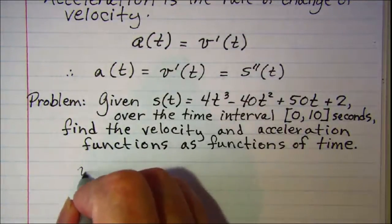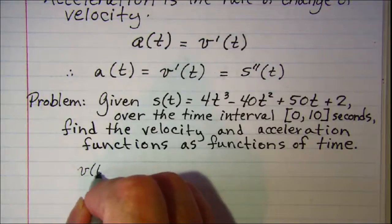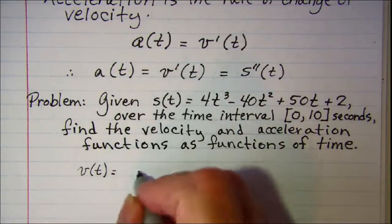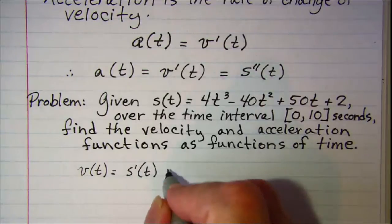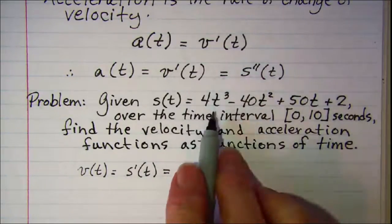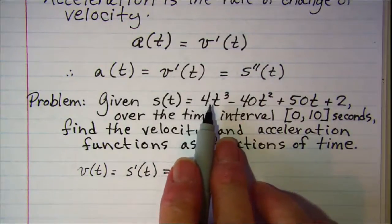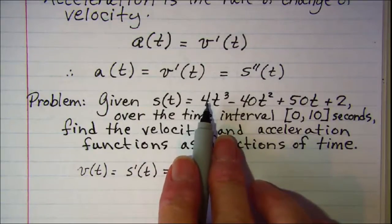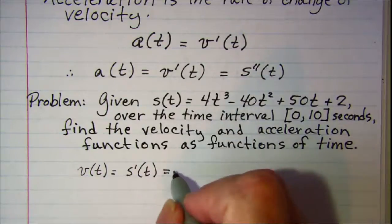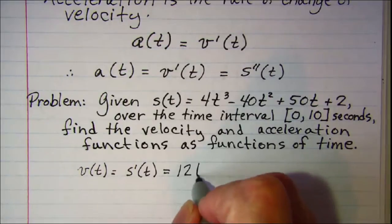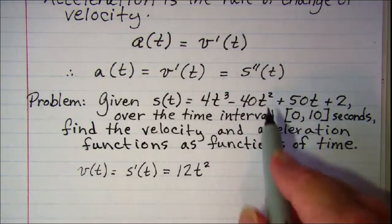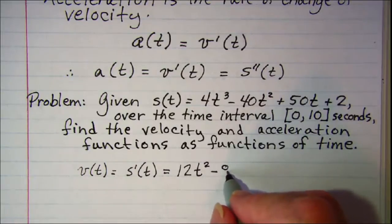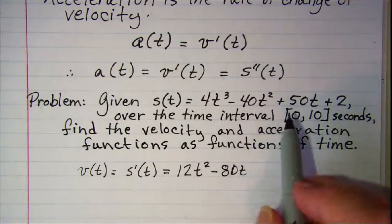Well, first our velocity function is the first derivative of our position function, so we can find that easily using the power rule. We get 12t squared minus 80t plus 50.